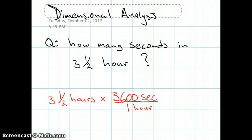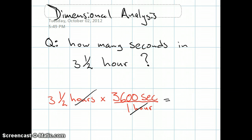Properly written, our conversion factor is 3600 seconds over 1 hour. When you multiply 3.5 hours by this conversion factor, the hours cancel, and we are left over with seconds. And so we end up with an answer of 12,600 seconds.